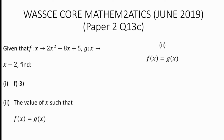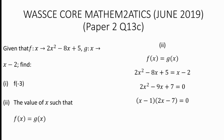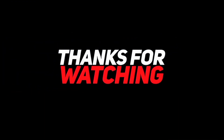For part (ii), f(x) equals g(x), where f(x) is 2x squared minus 8x plus 5 and g(x) is x minus 2. By simplifying, we get 2x squared minus 9x plus 7 equals 0. Finding the factors of this quadratic equation: (x minus 1)(2x minus 7) equals 0. So x equals 1 or x equals 7 over 2.